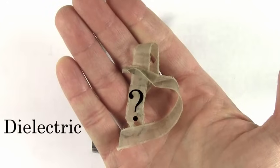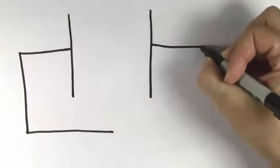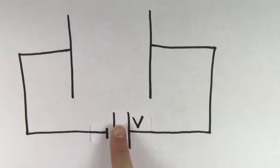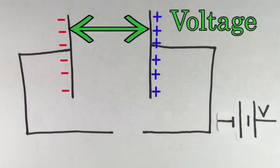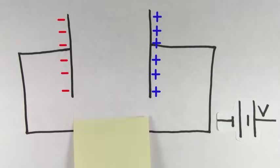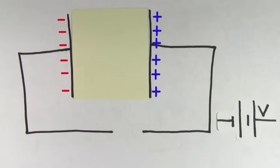But why does a dielectric increase the capacitance? To find out, let's look at this example. When you hook up a battery of voltage V to a capacitor, charge will get separated. Now let's say you remove the battery. The charge is stuck on the plates since the negatives don't have a path to get back to the positives. So even after removing the battery, the charge on the plates is going to remain the same, and the voltage will also remain the same as the voltage of the battery that charged it up. Now imagine placing a dielectric in between the plates of the capacitor.